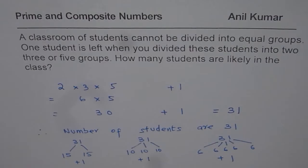So that is how, whenever you try to divide them into different number of groups, you are left with one student when you divide them into two, three or five groups. The number is thirty-one.